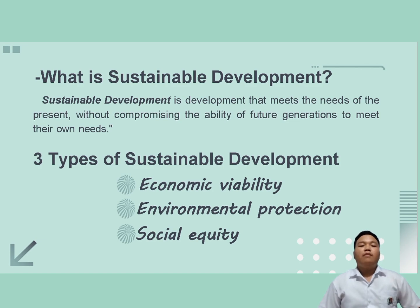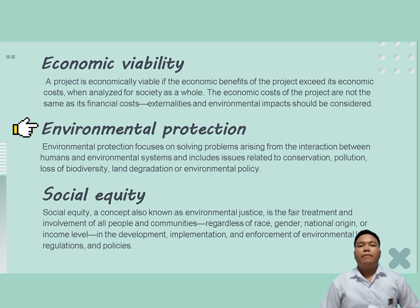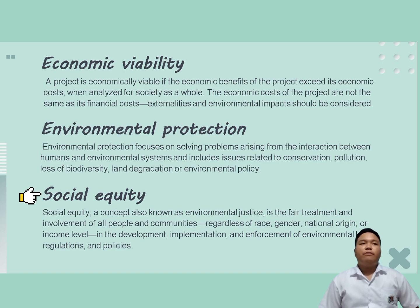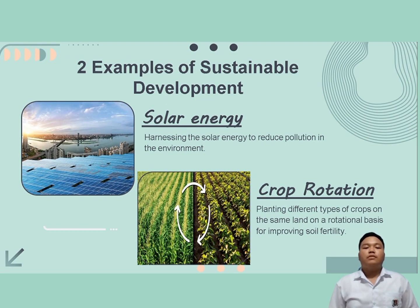What are these three types? Economic viability refers to the budget of the economy — separate from the personal budget of individuals. Environmental protection refers to the care and protection of our environment. Social equity refers to giving equal treatment regardless of whether one is rich or poor, or of different races. We also have two examples of sustainable development: solar energy and crop rotation.